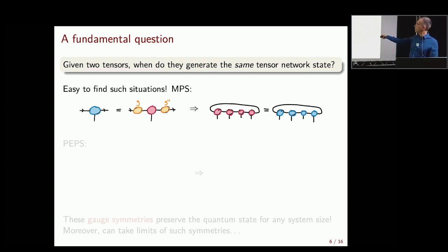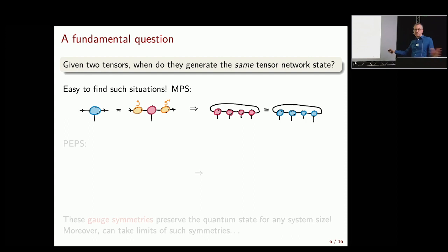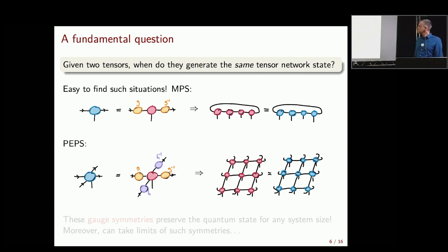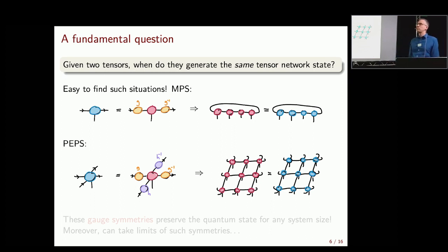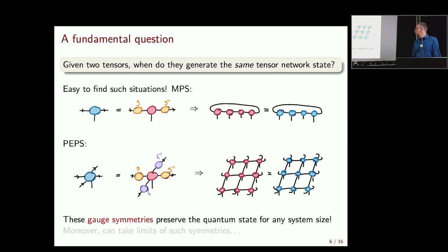If you have two MPS tensors — the red and the blue — and you left-multiply one virtual bond by a matrix G and the other side by its inverse, then when you compute the many-body quantum state, the G and G-inverse cancel, so clearly this defines the same quantum state for any system size. For PEPS, you have even more freedom: you can insert GG-inverse on horizontal in-plane legs and HH-inverse on vertical in-plane legs, again giving the same many-body quantum state for arbitrary system size. This is called the gauge symmetry of this class of tensor networks.